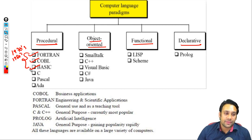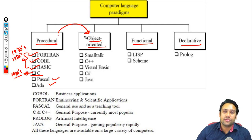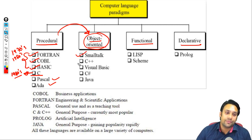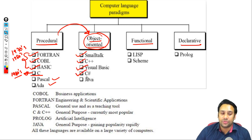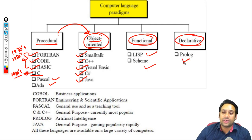After those, we have C and ADA as procedural languages. From procedural languages, the concept of object-oriented programming language was designed — including Smalltalk, C++, Visual Basic, C# .NET, and Java. Then there are functional programming languages like Lisp and Scheme, and declarative languages like Prolog.